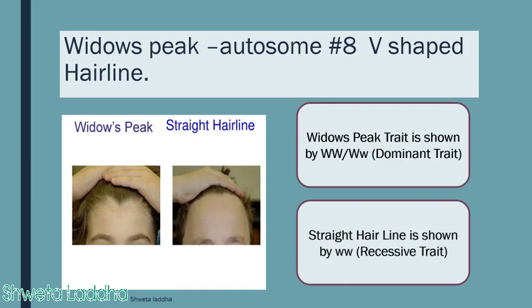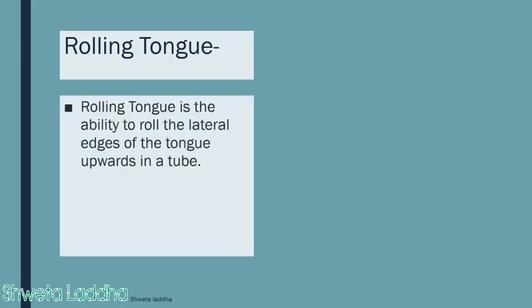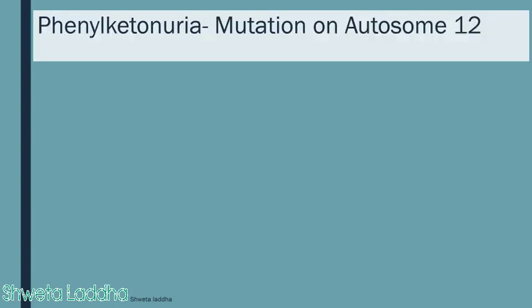Rolling tongue is another autosomal dominant trait — the ability to roll the lateral edges of the tongue upward to form a tube. A person with homozygous dominant (RR) or heterozygous (Rr) genotype can roll the tongue. However, a person with homozygous recessive genotype (rr) is unable to roll their tongue. This is simply a trait; we are discussing autosomal linked traits.